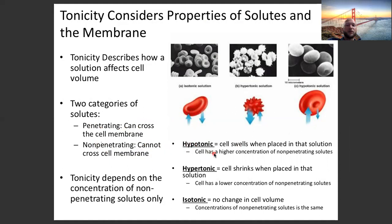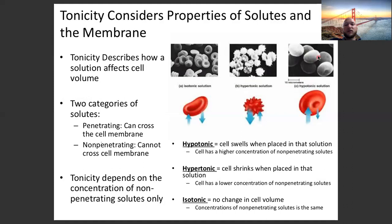In a hypotonic situation, a cell swells when placed in that solution because the cell has a higher concentration of non-penetrating solutes. Here is what a red blood cell looks like in a hypotonic solution. There is a higher concentration of non-penetrating solutes within the red blood cell — the solution to pollution is dilution — so water moves towards the higher concentration of dissolved particles inside the red blood cell, making it swell up like a balloon.